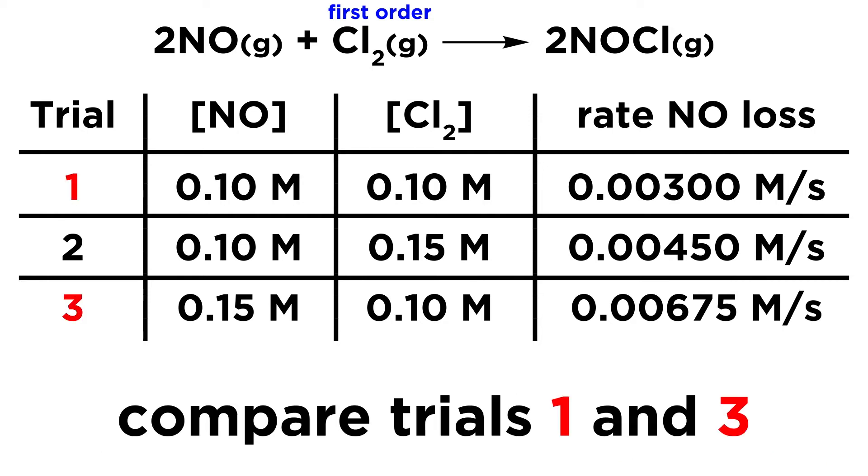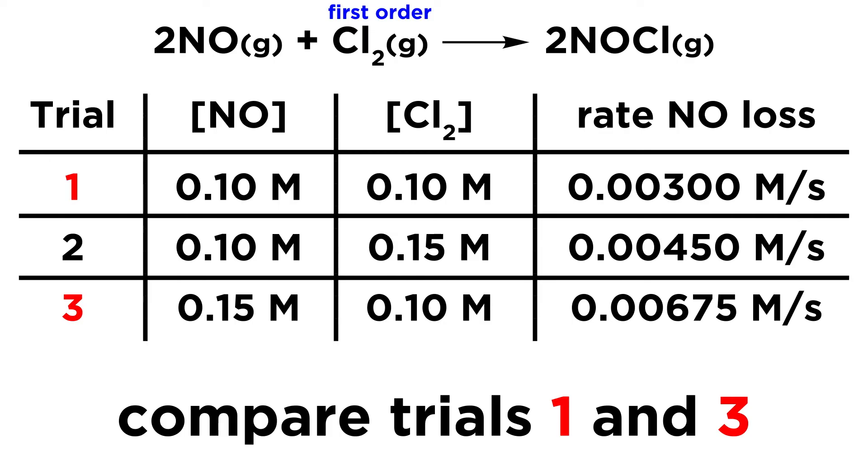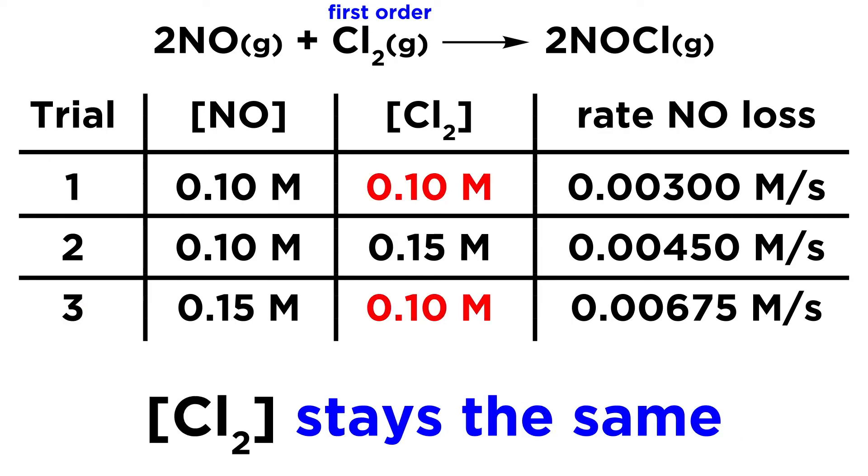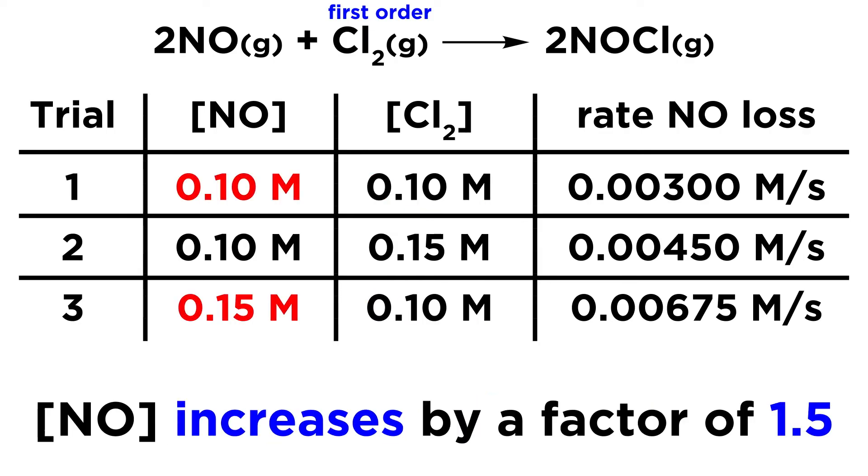Okay, so next, let's compare trials 1 and 3. So first, we will notice that this time the concentration of Cl2 stays the same. However, the concentration of NO increases by a factor of 1.5, again from 0.1 to 0.15.